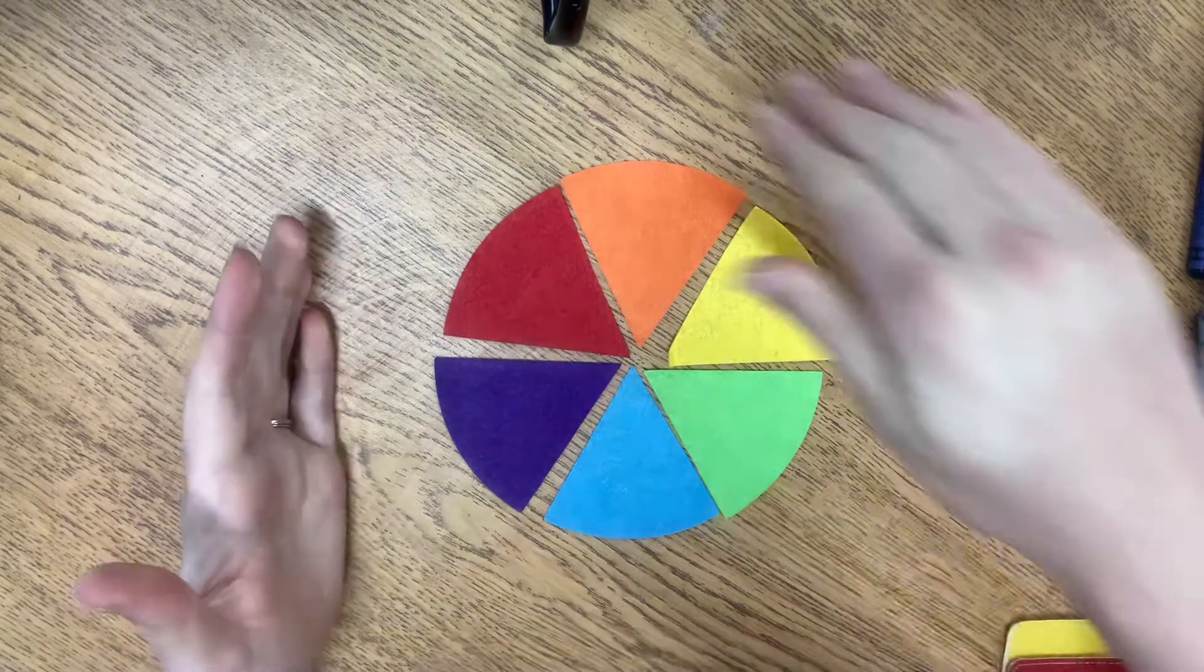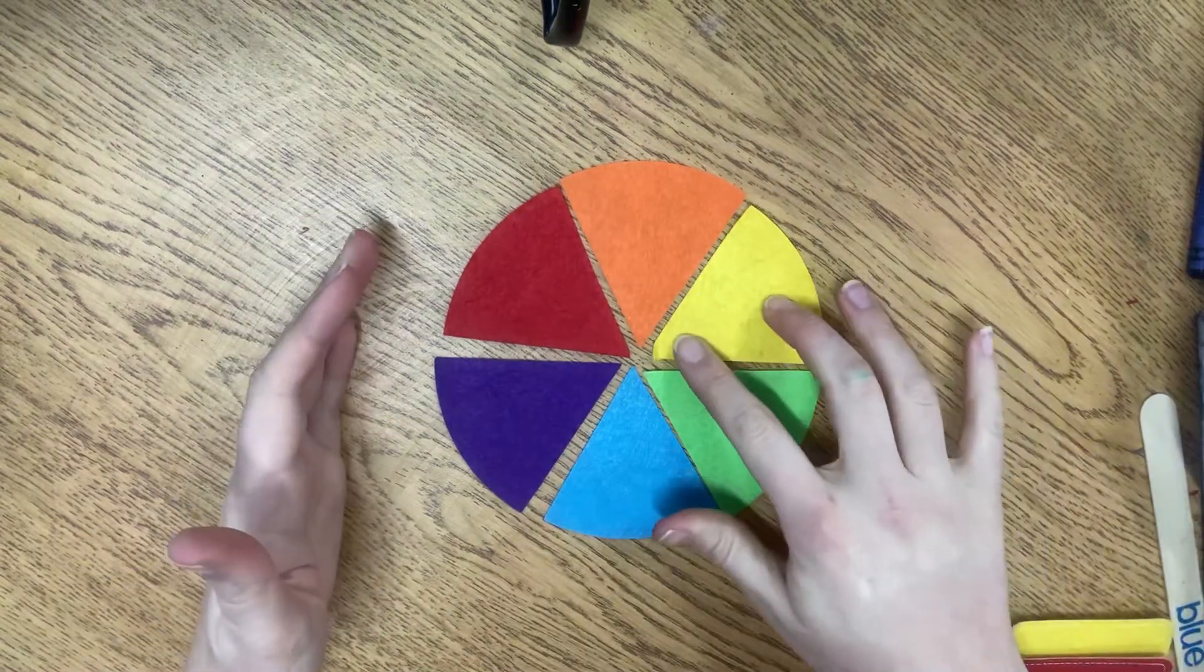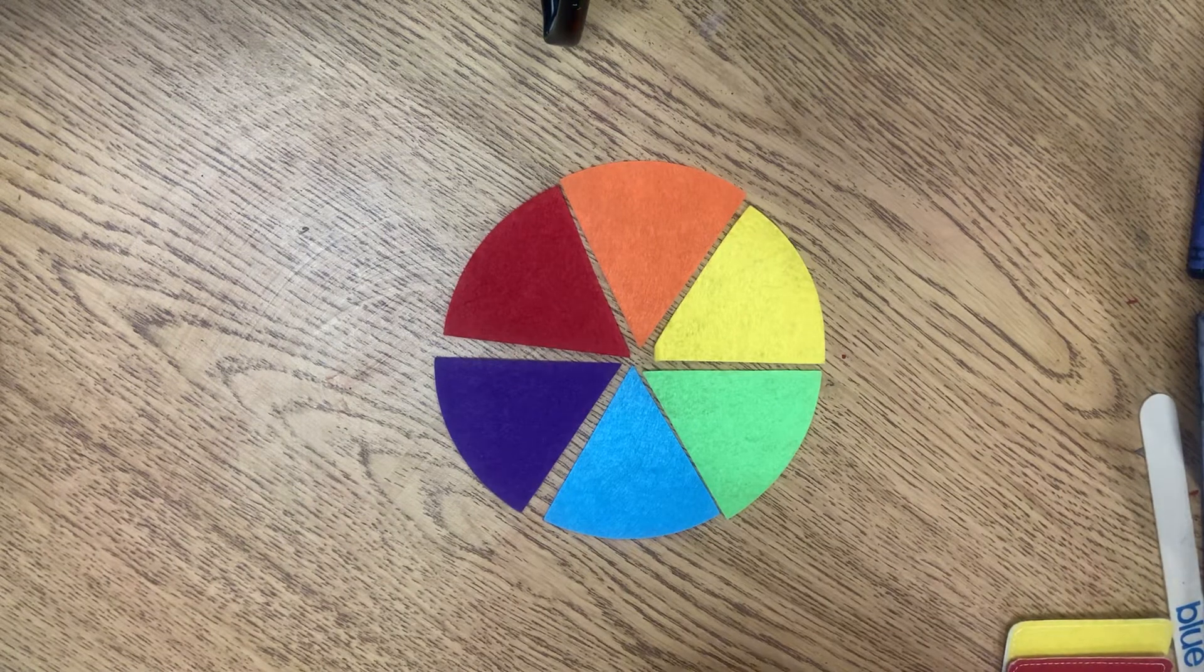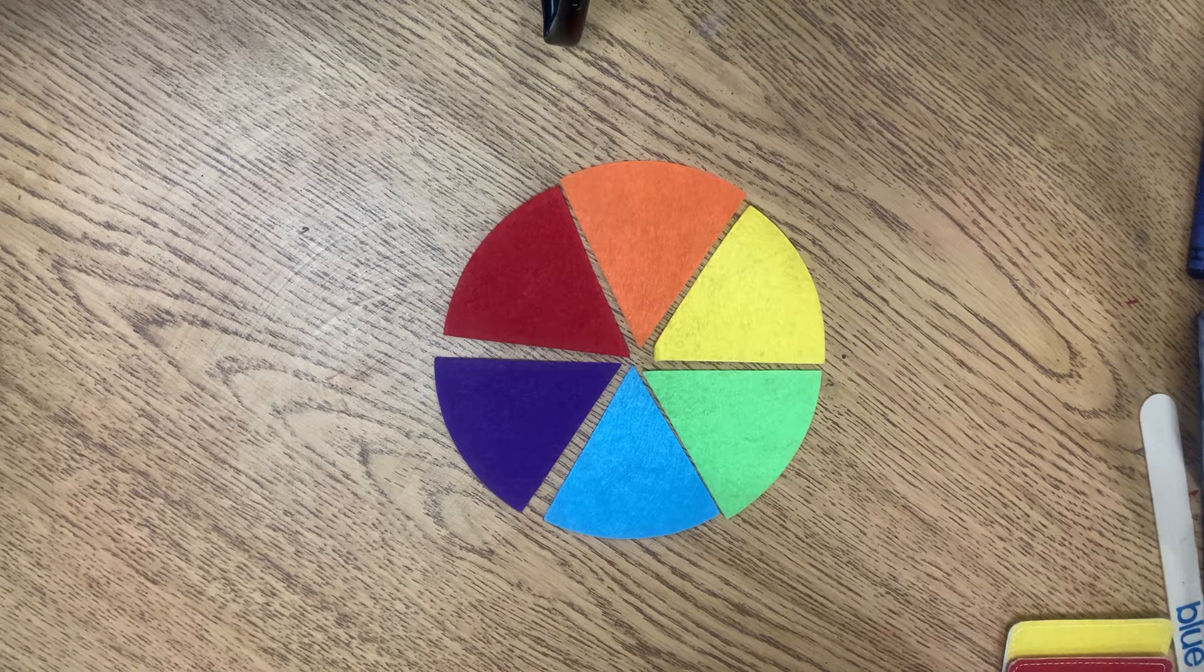But to begin, we need to look at this thing right here. This is not a colorful pizza or pie. This is a color wheel. Our color wheel kind of gives us some options here.